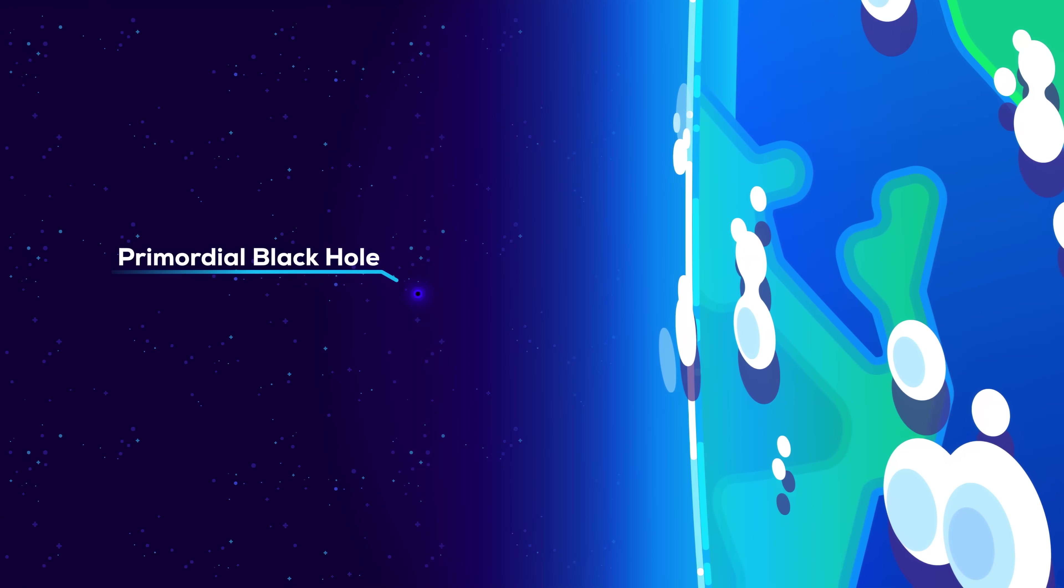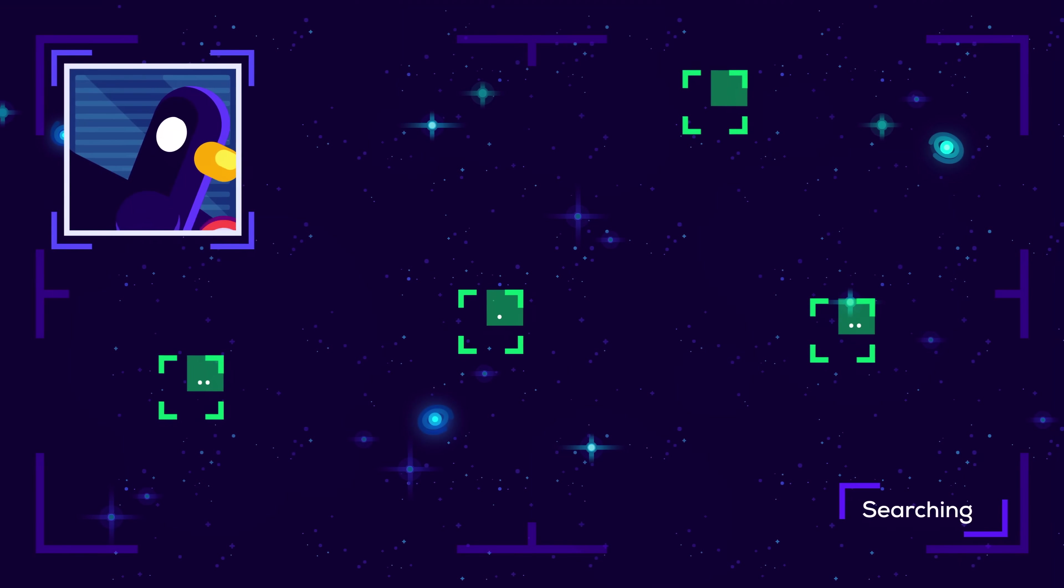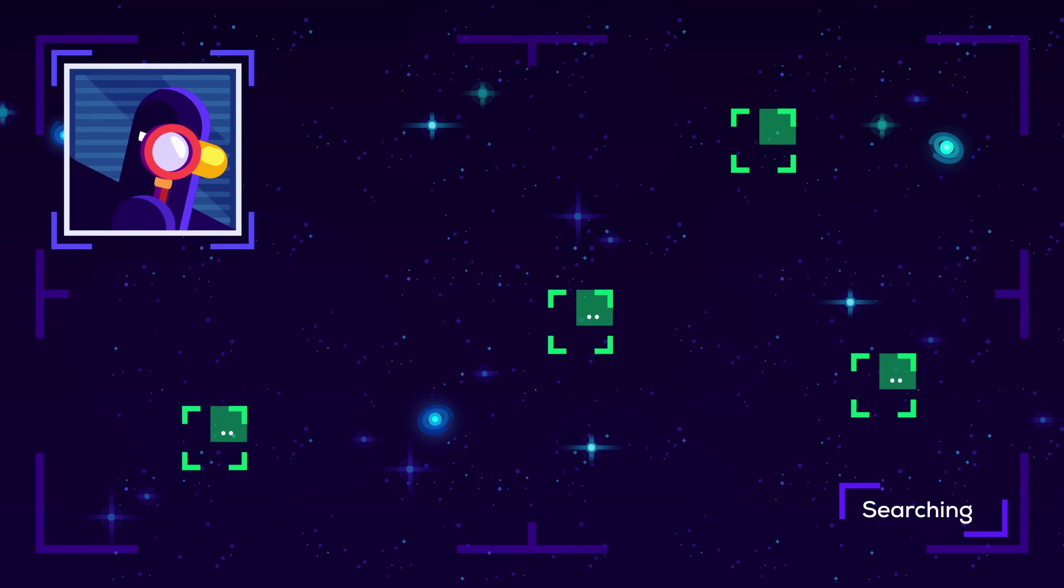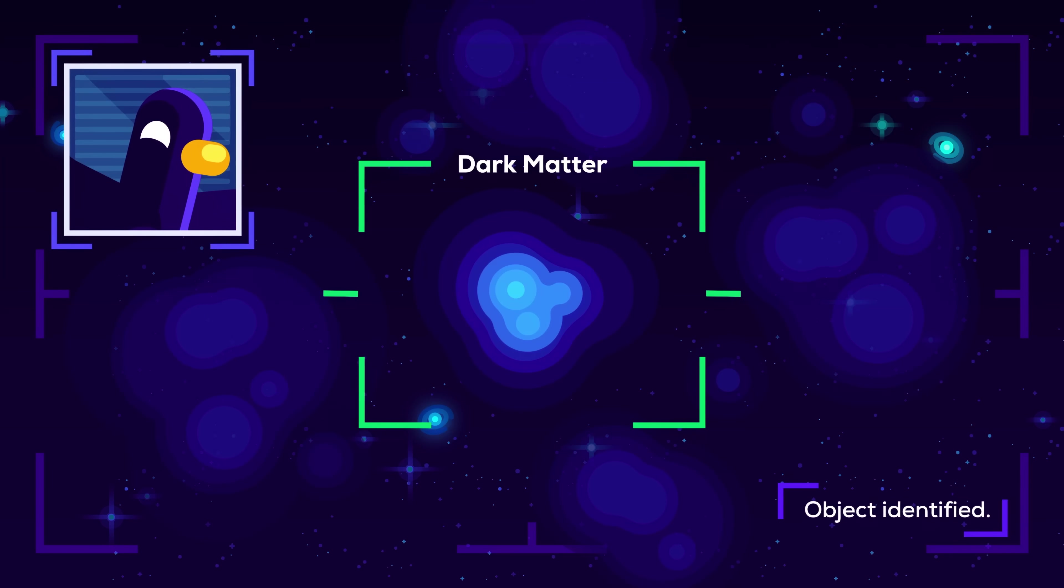A primordial black hole with the mass of Earth would barely be larger than a coin. This makes them very hard to find, so we haven't actually observed any yet. If they exist, they may even be the mysterious dark matter that holds galaxies together.